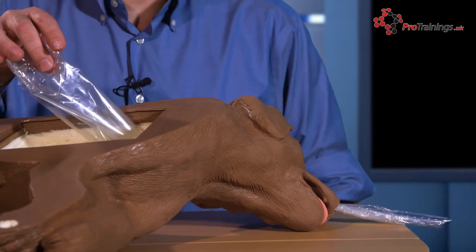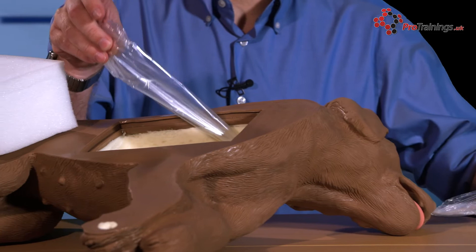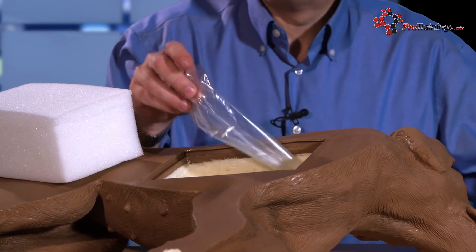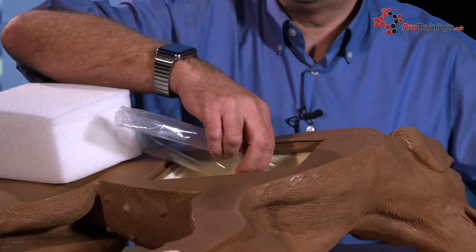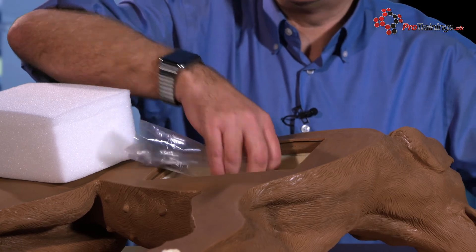Once you have got that through, just pull it back a little bit to make sure that the bag is clear. If you've got a twist in it you can just pull it backwards and forwards - that will take the twist out.